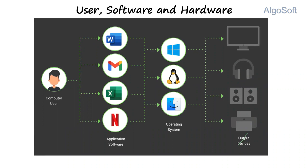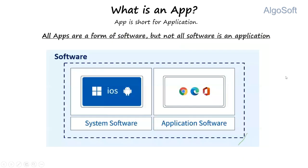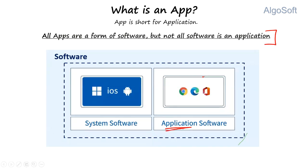We have 10 minutes left, so let's quickly cover what is an application, and then cover the rest tomorrow. We have seen that software is composed of two parts: system software and application software. Usually we call an application as an app. All apps are a part of software, but all software is not part of an application. Software is the bigger bucket, and within that, two boxes exist — system software and application software. So all applications are a form of software.